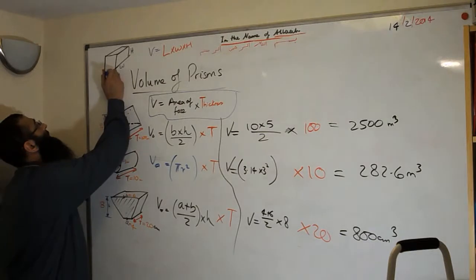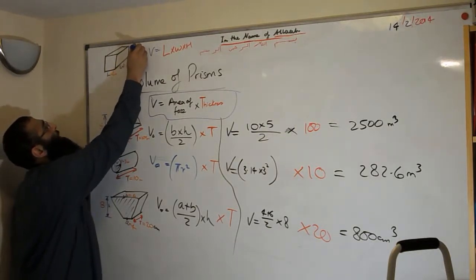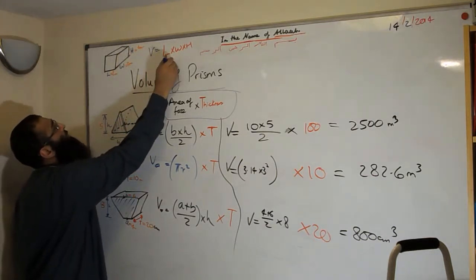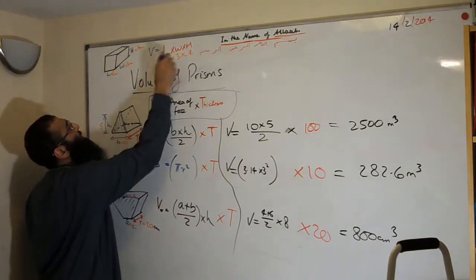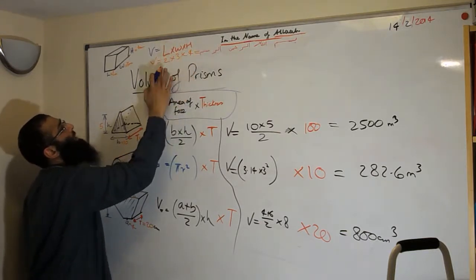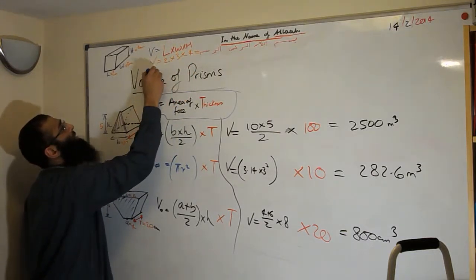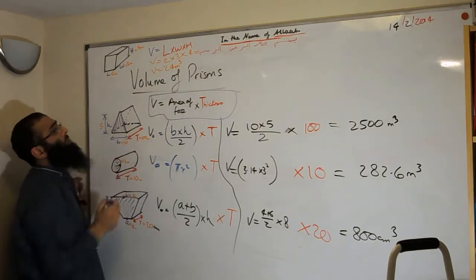For the cuboid: the length is 2 meters, the width is 3 meters, and the height is 4 meters. So volume equals 2 times 3 times 4. Two times 3 is 6, times 4 equals 24. The volume is 24 meters cubed.